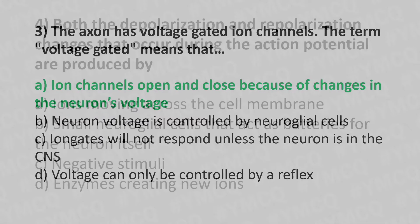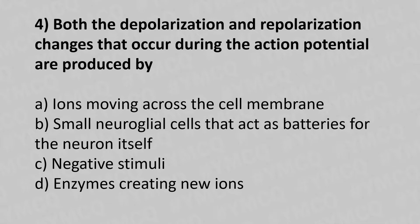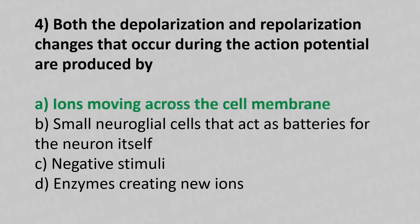Question 4: Both the depolarization and repolarization changes that occur during the action potential are produced by — Option A: ions moving across the cell membrane. Option B: small neuroglial cells that act as factories for the neuron itself. Option C: negative stimuli. Option D: enzymes creating new ions. The answer is Option A — ions moving across the cell membrane.